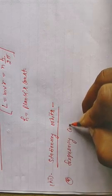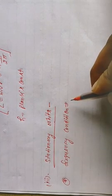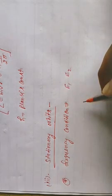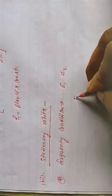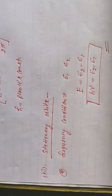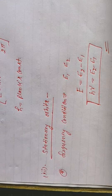Frequency condition लेते हैं। Suppose कि energy E1 और E2 associated हो रही है — E1 और E2 higher और lower orbits की energies हैं। तो उनकी frequency condition होगी: E = hν, यानि E2 minus E1 = hν। यह fourth postulate थी।